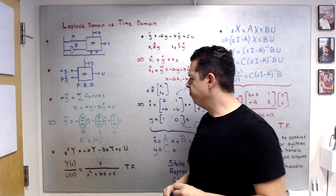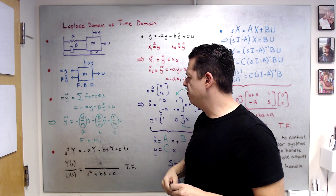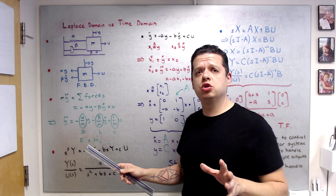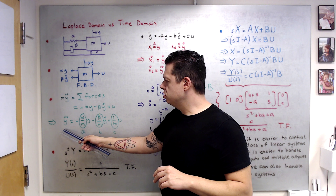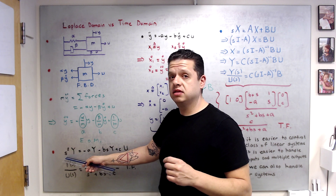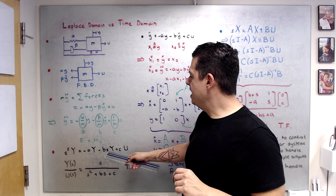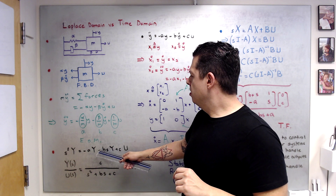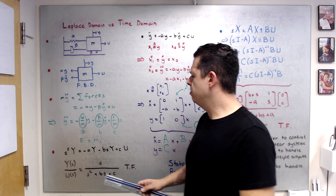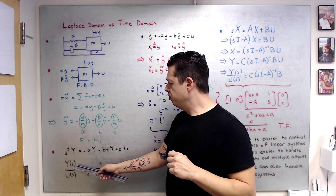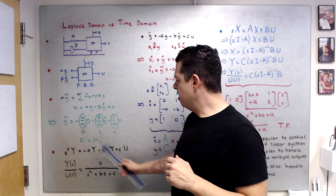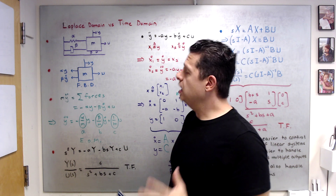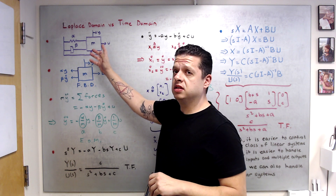In the Laplace domain we use transfer functions. If you take the Laplace transformation of this ordinary differential equation, subject to zero initial conditions by the definition of transfer function, y-double-dot transforms to s² · Y and y-dot transforms to s · Y. Arranging for output divided by input, we have the transfer function: c divided by (s² + bs + a). This is our transfer function in the Laplace domain.